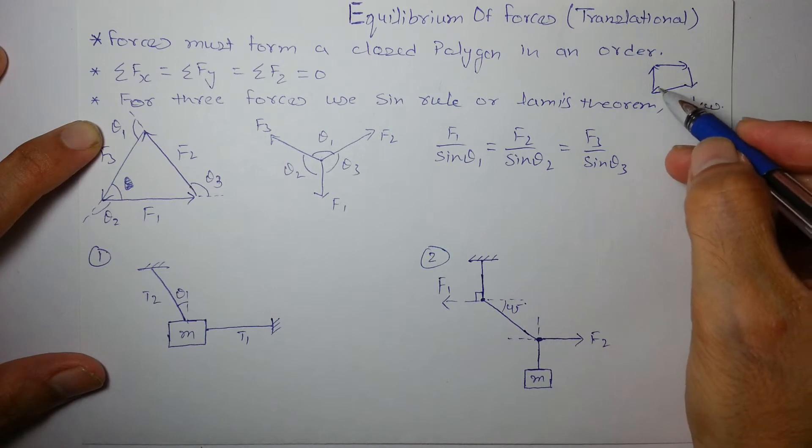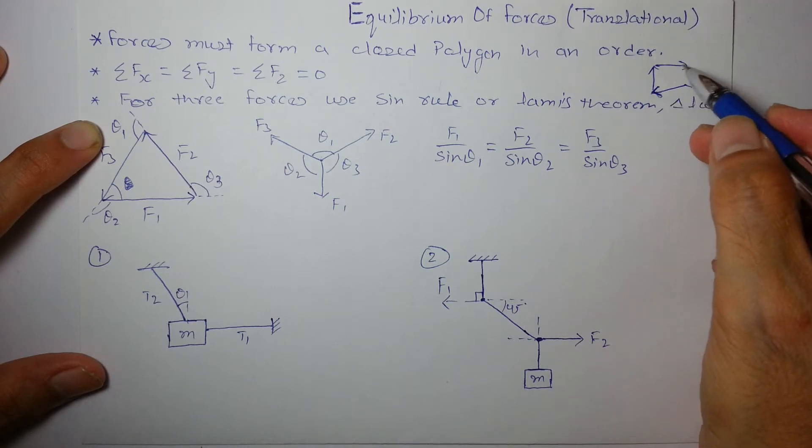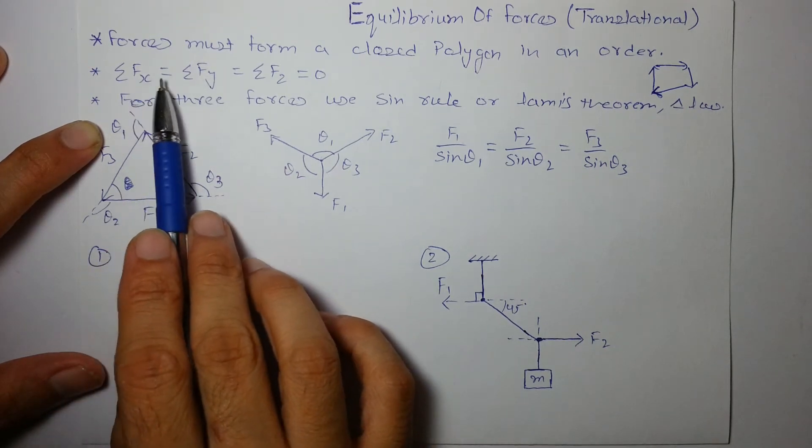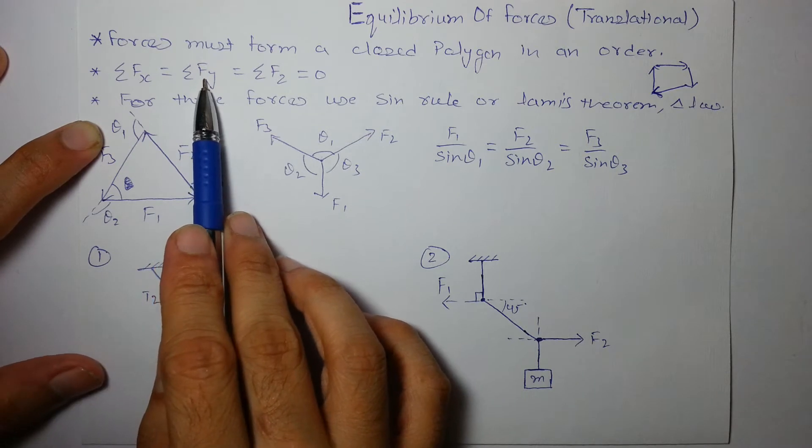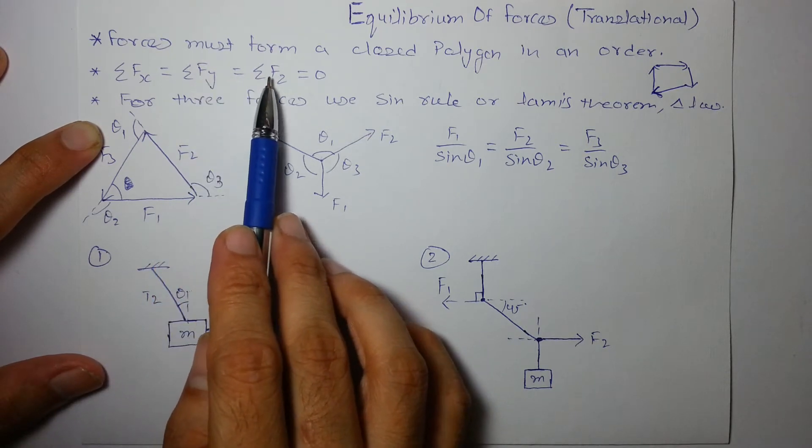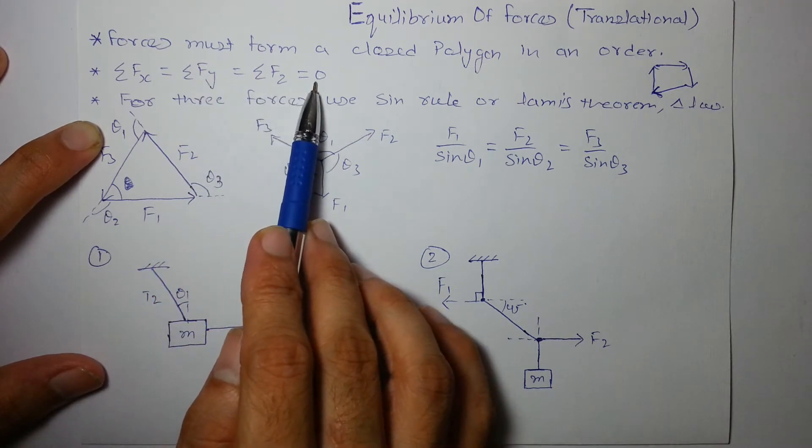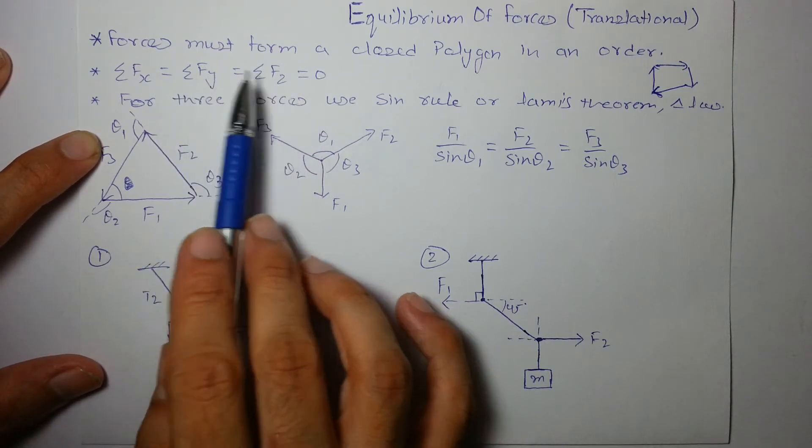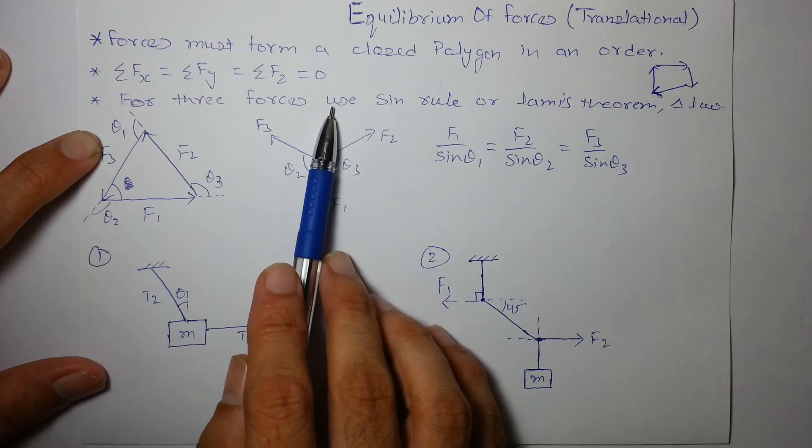Again in an order these forces will give you a zero resultant if they form a closed polygon. The summation of x component of forces will be equal to summation of y component of forces and summation of z component of forces will all give you zero. Only then the net force will be zero and the object will be in equilibrium.